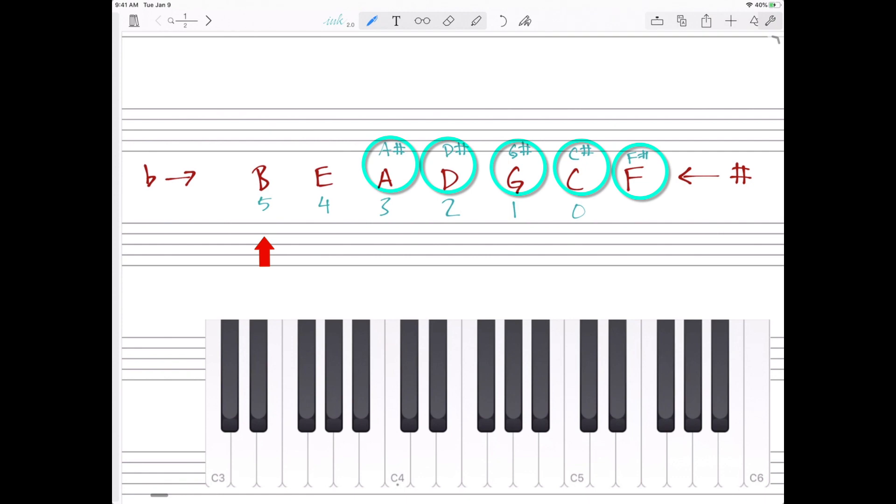And then we go to the other side. F sharp is the next key. And F sharp has all of these same sharps, but we add E sharp. F sharp has six sharps. And then C sharp has seven sharps. And we add a B sharp.